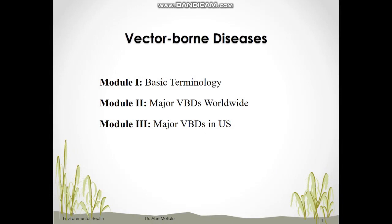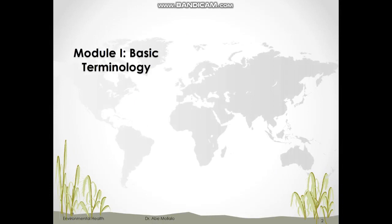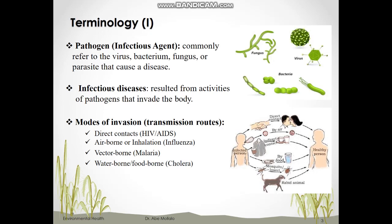Let's start with the basic concepts and terminologies in vector-borne and zoonotic disease. The first concept is pathogen or infectious agent. Pathogen refers to the bacteria, virus, parasite, and fungus that are necessary to cause the disease. They are also known as germs. These germs or pathogens live in our body and normally they are harmless, but under some conditions they can invade our body and cause disease.